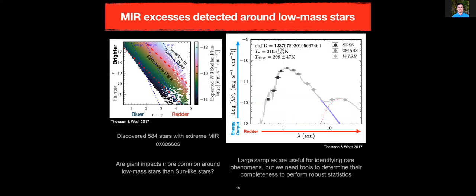From this sample, I identified 584 low mass stars with extreme mid-infrared excesses. Here I'm showing a spectral energy distribution for one of the objects I found. These points show photometry from the different surveys — SDSS, 2MASS, and WISE — each one representing a different filter. I'm showing the model stellar photosphere in blue that best fits the data, and the combination of the best model for the stellar photosphere and the mid-infrared flux — fit as a thermal black body — in the gray and red dotted line. The real question we want to answer is: are these giant impacts more common around low mass stars than sun-like stars?